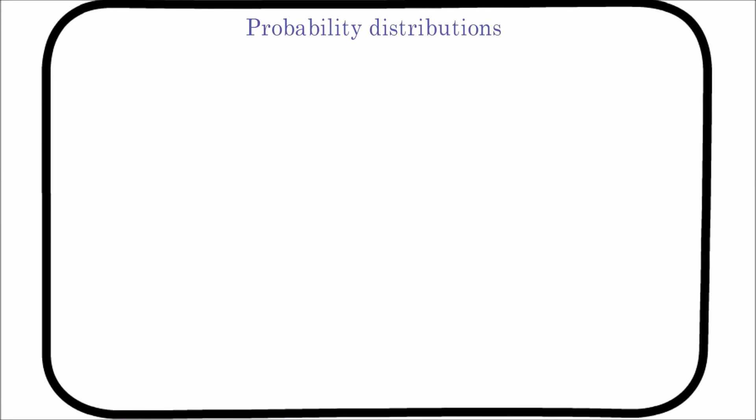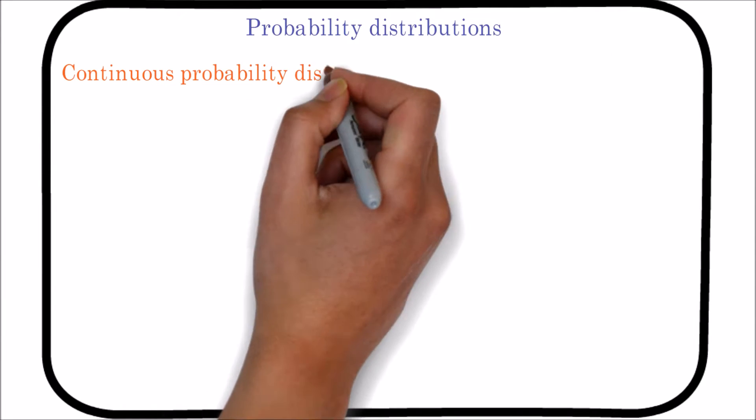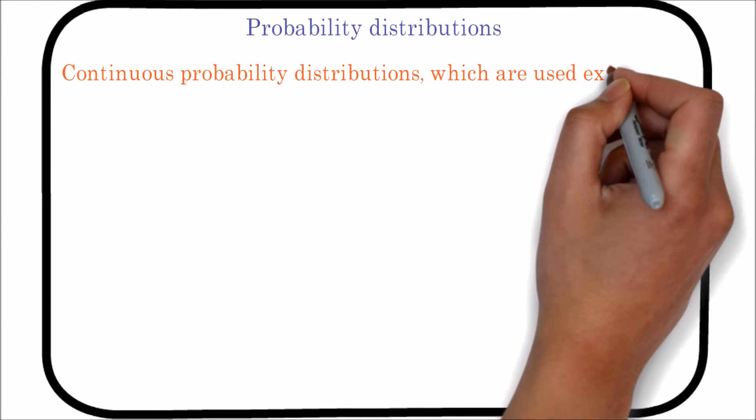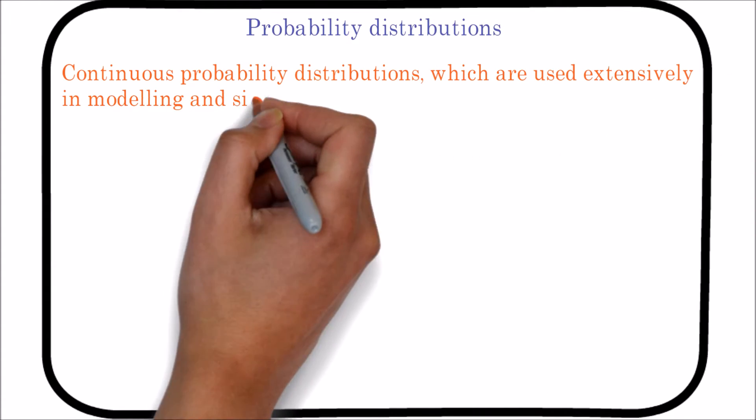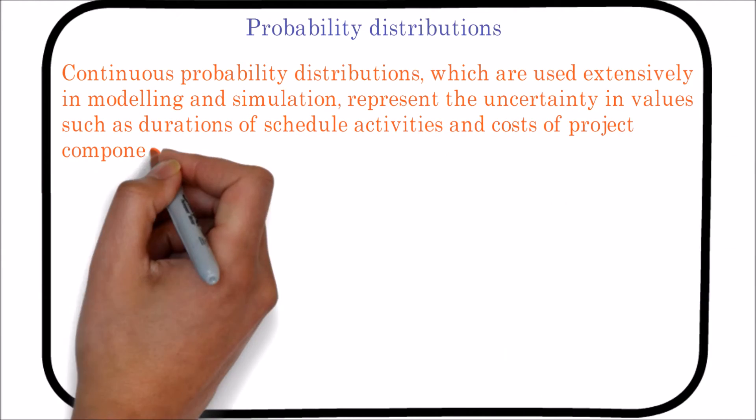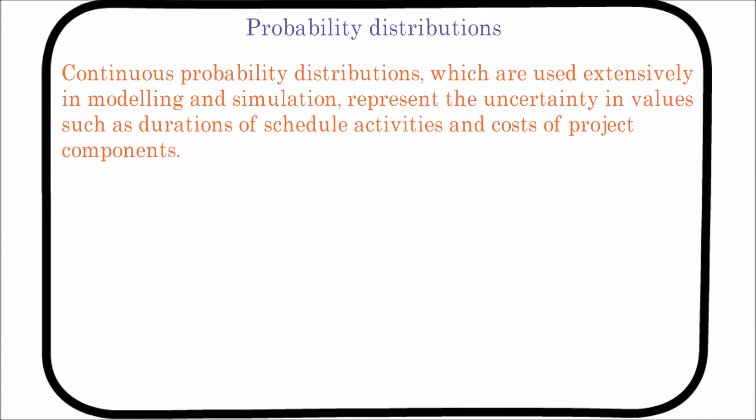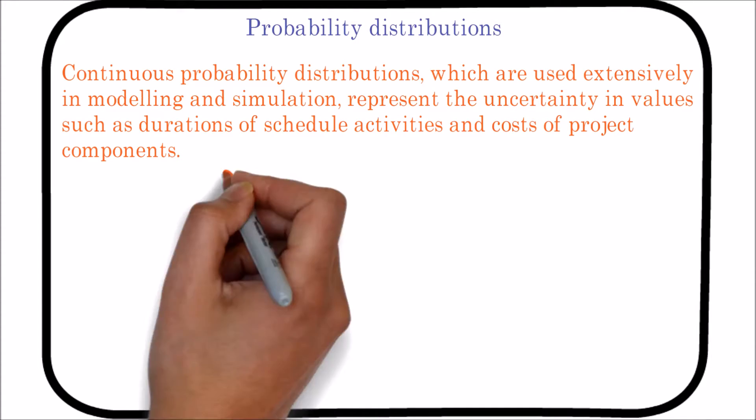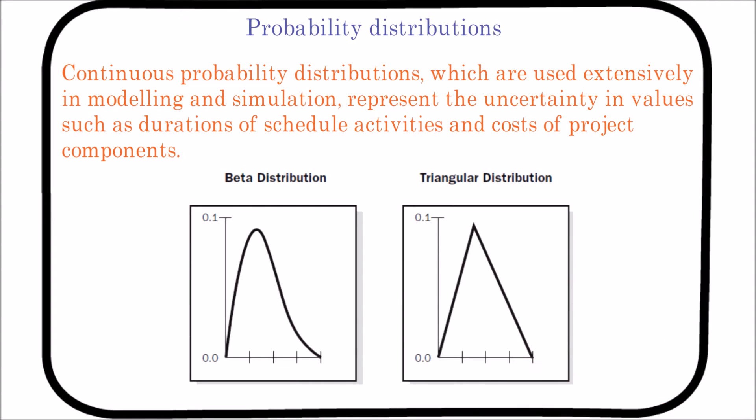Probability Distributions. Continuous probability distributions, which are used extensively in modeling and simulation, represent the uncertainty in values such as durations of schedule activities and costs of project components. Discrete distributions can be used to represent uncertain events, such as the outcome of a test or a possible scenario in a decision tree. Here are the two widely used continuous distributions for your reference: Beta Distribution and Triangular Distribution.